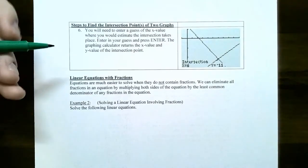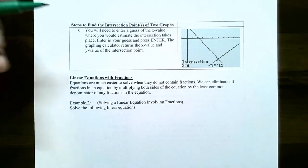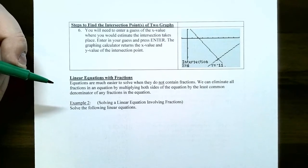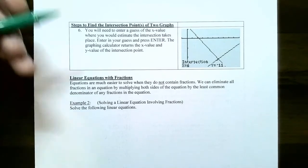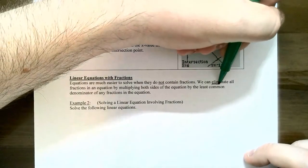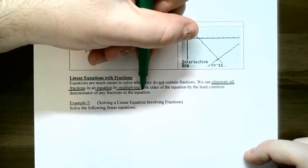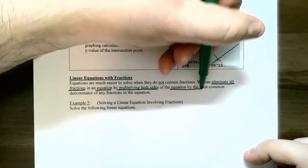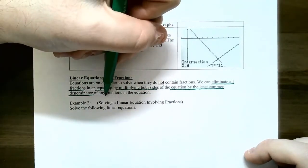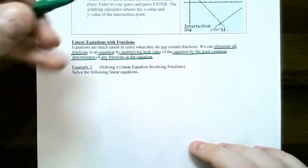Now we'll finish by talking about how to solve linear equations that contain fractions. Equations are much easier to solve without fractions. To eliminate all fractions, multiply both sides of the equation by the least common denominator — the LCD — of any fractions in the equation. Let's do a couple of examples.